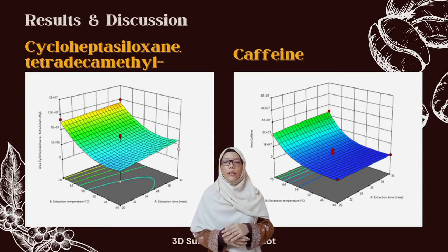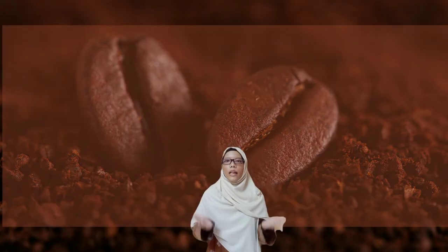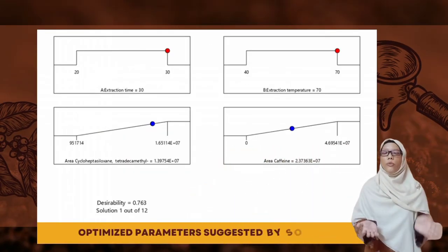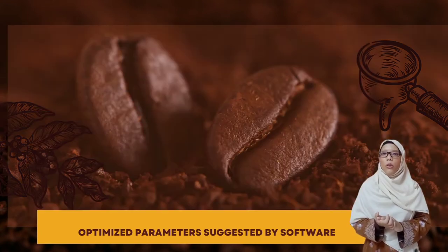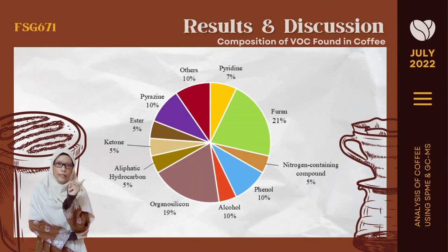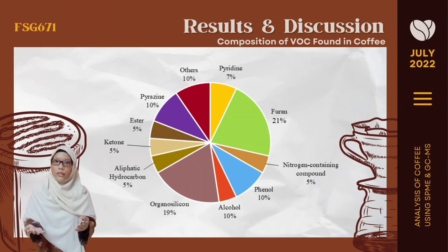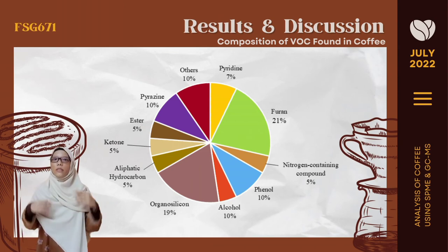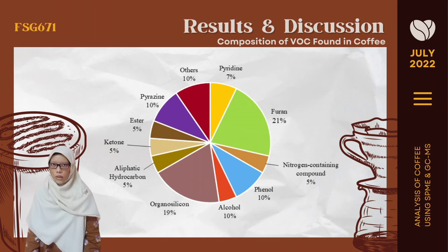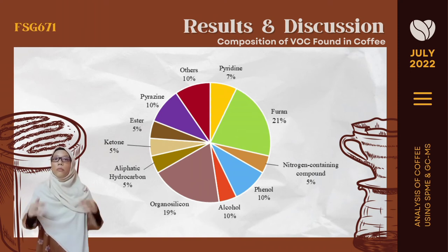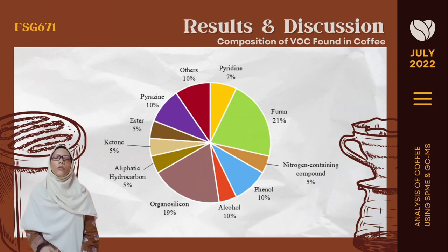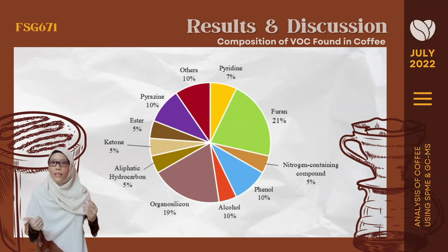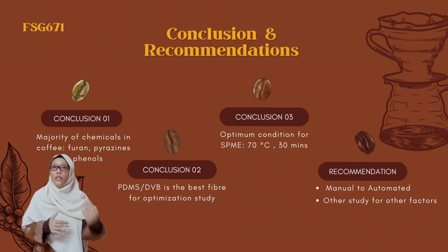The maximum output is obtained at the maximum temperature and time — 70 degrees Celsius for 30 minutes — which correlates with the optimal condition suggested by the software, with a desirability of 0.763 for SPME conditions parameters. Coffee has a distinctive aroma that contributes to its high consumption, and this pie chart shows the percentage composition of VOCs in that aroma. Furan contributes the most percentage composition, emitting a vegetal and earthy smell, while phenols and pyrazines contribute their spicy, clove-like, and roasted smell.